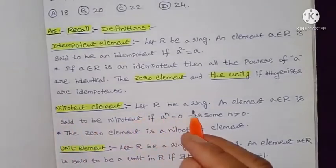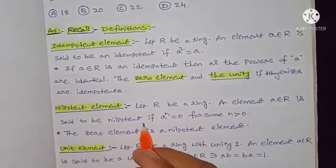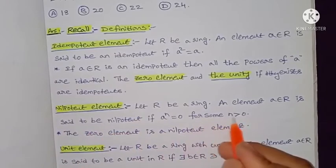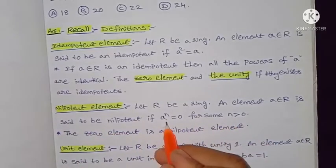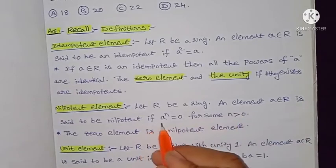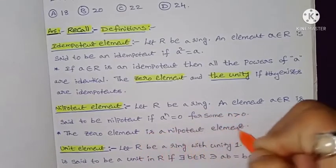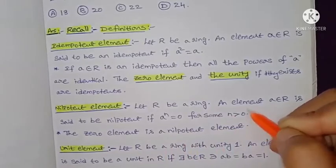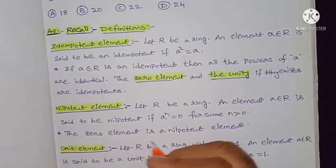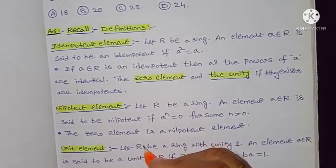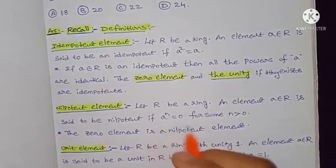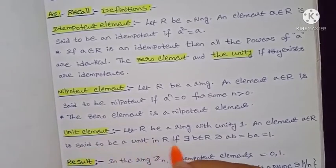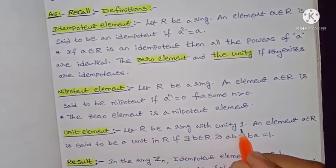Next, the nilpotent element definition: let R be a ring. An element a belonging to R is said to be nilpotent if a to the power n equals zero for some positive integer n greater than zero. An important point: the zero element in ring R is trivially a nilpotent element.